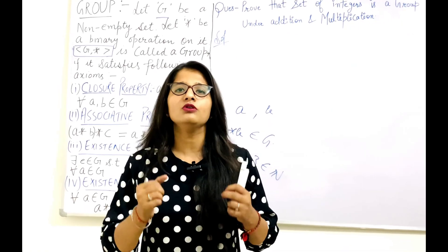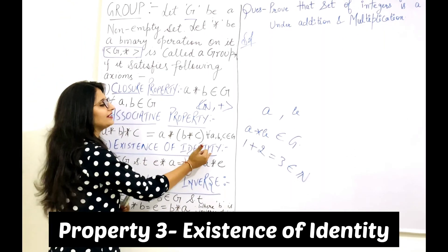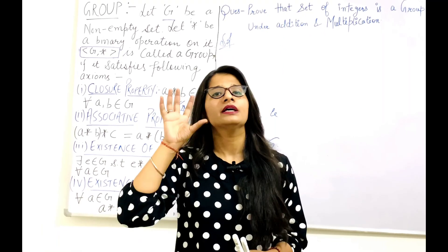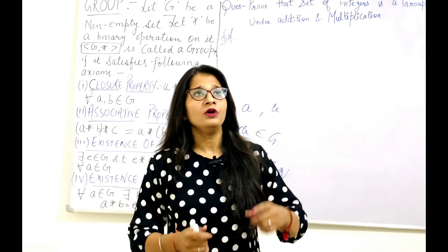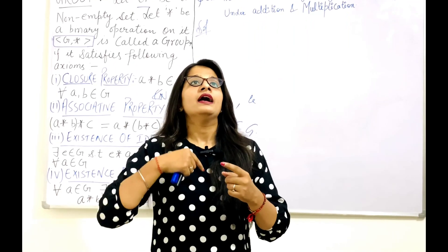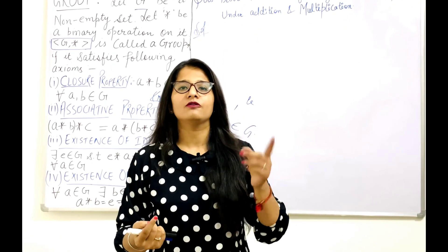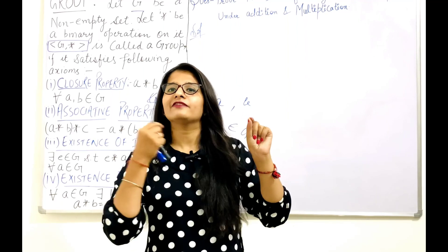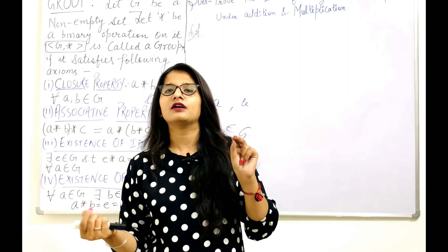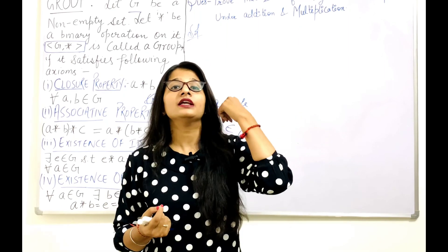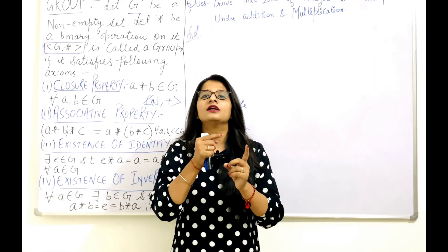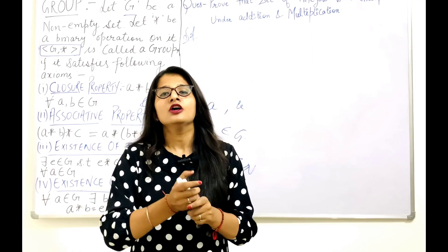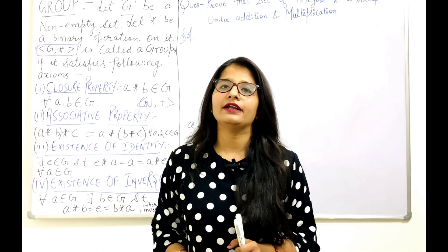The third property is existence of identity. Identity means keeping the element the same. For addition, the identity element is 0, because adding 0 to any number leaves it unchanged — for example, 5 plus 0 is 5, and 6 plus 0 is 6. For multiplication, the identity is 1, because 5 into 1 is 5 and 6 into 1 is 6. So the additive identity is 0 and the multiplicative identity is 1.